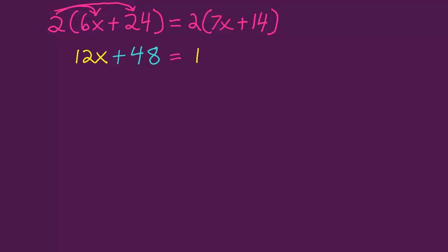That's going to equal, we'll take that 2 on the right, multiply it by the 7x and get 14x, multiply the 2 times 14 and get 28. 14x is a variable term, 28 is a constant term.